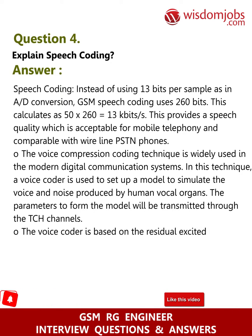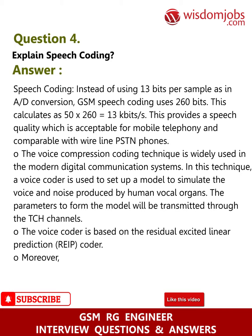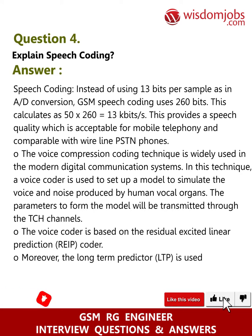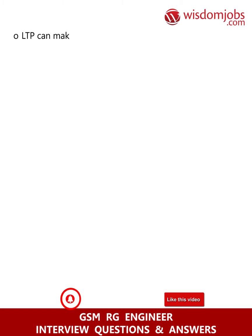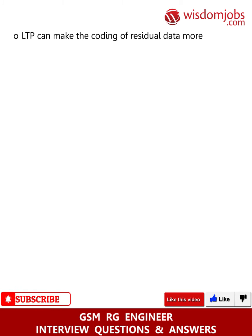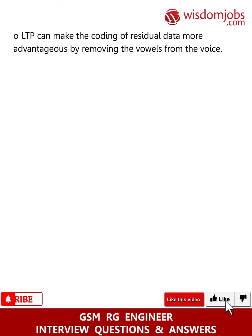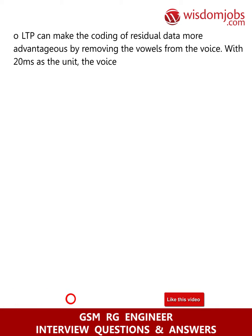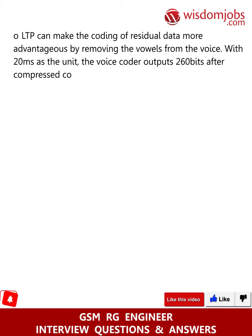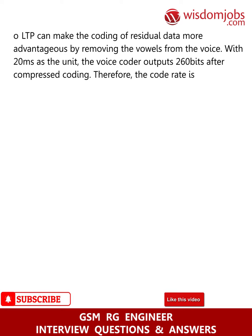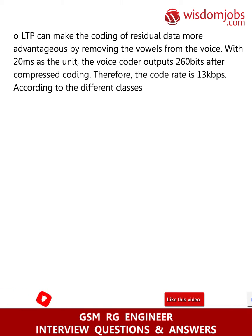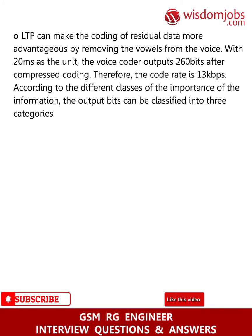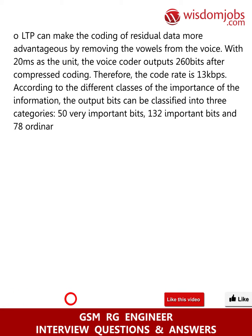The parameters to form the model are transmitted through the TCH channels. The voice coder is based on the Residual Excited Linear Prediction (RELP) coder. Moreover, the Long-Term Predictor (LTP) is used to enhance the compression effect. LTP makes the coding of residual data more advantageous by removing the vowels from the voice with 20 ms as the unit. The voice coder outputs 260 bits after compressed coding, giving a code rate of 13 kilobits per second.